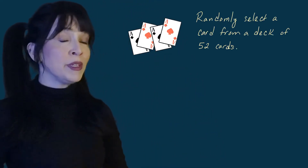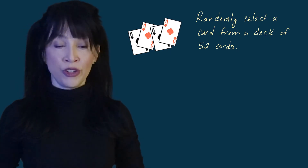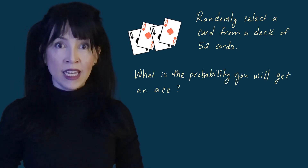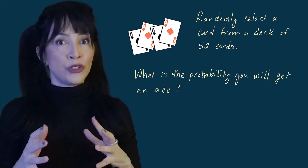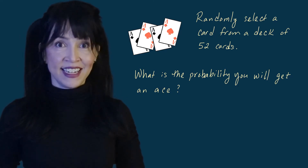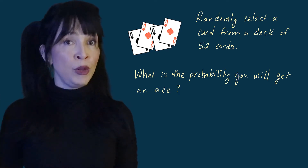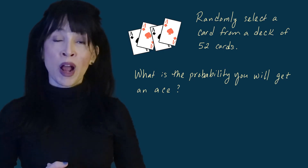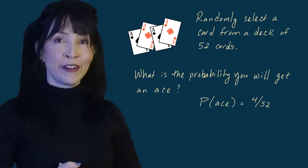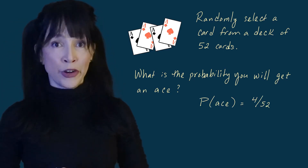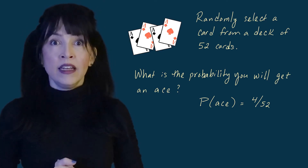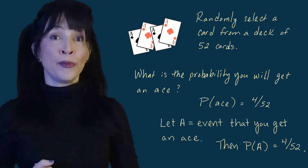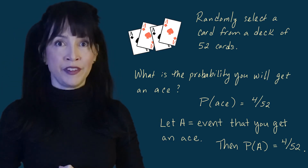We had one coin with two sides and a die with six sides. Now let's get a deck of 52 cards. Randomly select a card — what is the probability you will get an ace? There are four aces in the deck of 52 cards, and if they're shuffled and you are truly randomly selecting, all cards are equally likely. So the probability of getting an ace is 4 out of 52. Letting A be the event we get an ace, P(A) = 4/52.